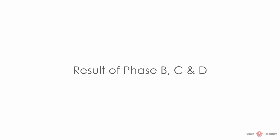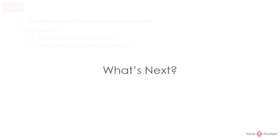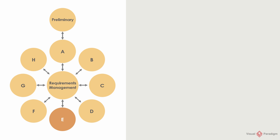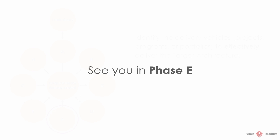The primary goal of Phase B, C, and D is to produce the baseline, target, and gap for the three architecture domains — business, information systems, and technology. The deliverables produced in this phase are the Architecture Definition Document and the Architecture Requirements Specification. We can now move on to Phase E. In Phase B, C, and D, you developed the target architectures and recognized the gaps between baseline and target. Before implementing the requirements, you have to identify the delivery vehicles to effectively deliver the target architecture, which is what you will do in Phase E. Thanks for watching.